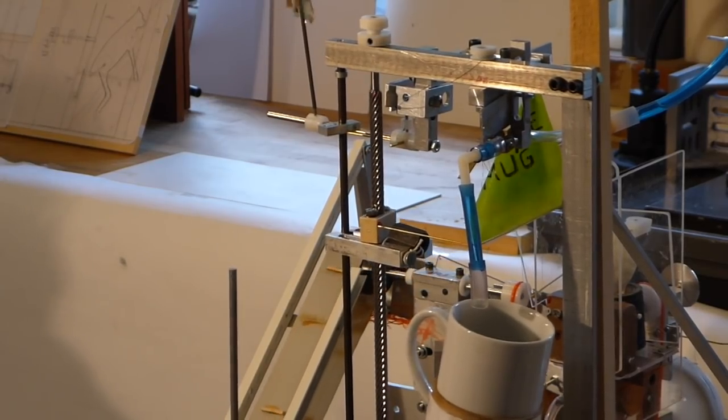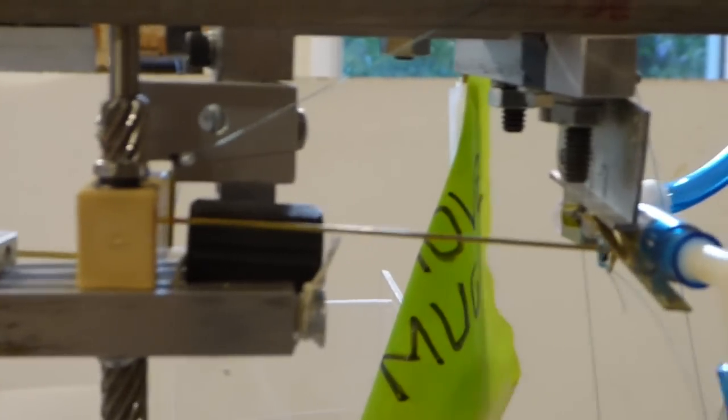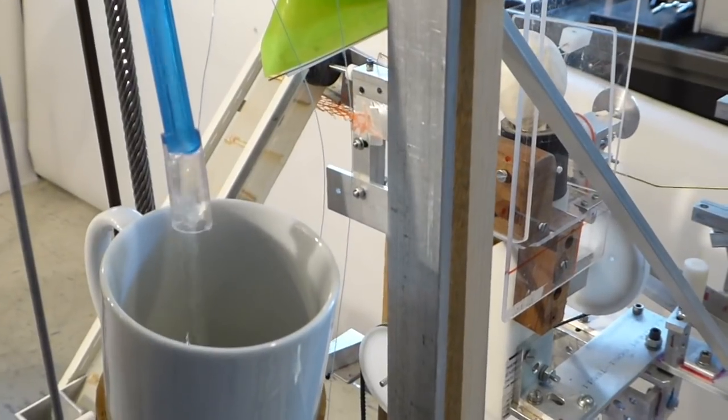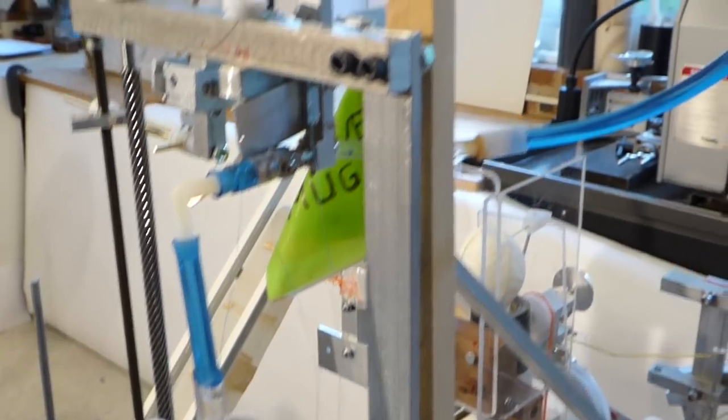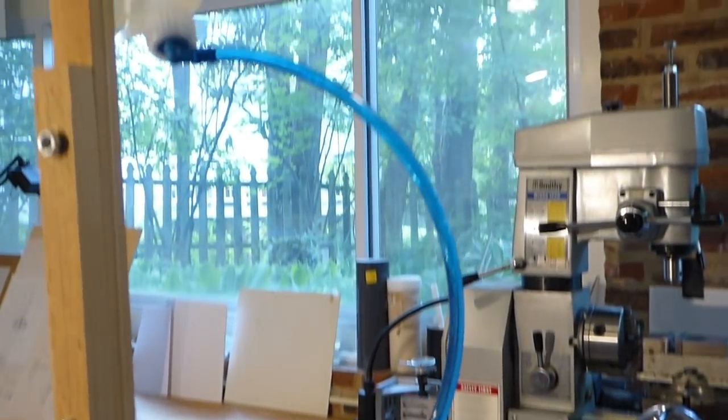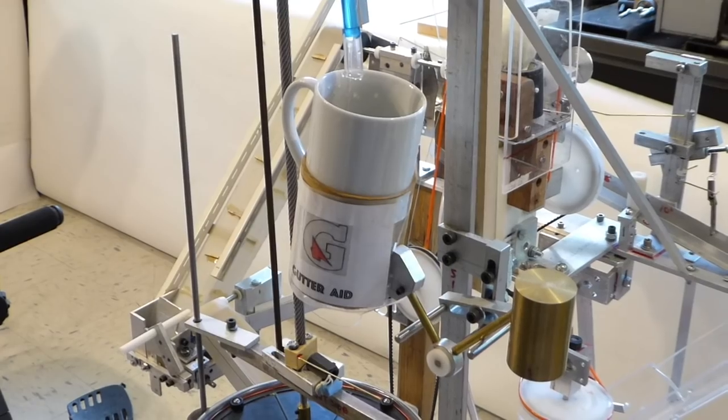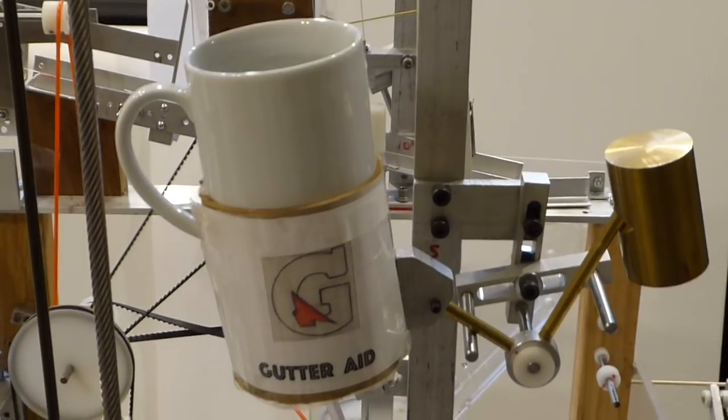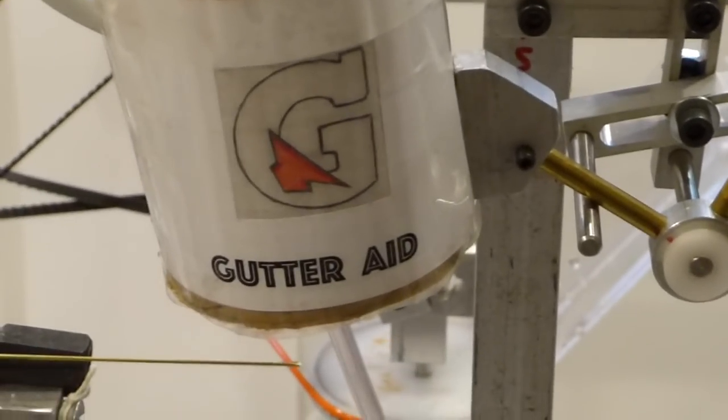When the nut finally gets to the top of the lead screw, the thin rod attached to the nut pushes up against the handle of a flow valve, opening it and allowing fluid to fill the mug. When the mug is full, it falls forward, pulling the flow valve shut, and I can finally get my well-earned drink.